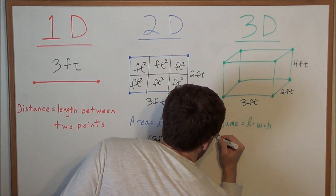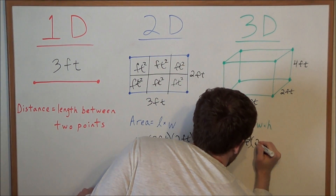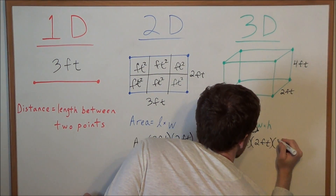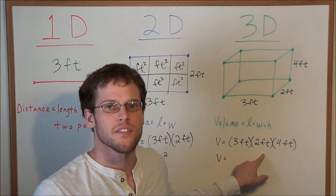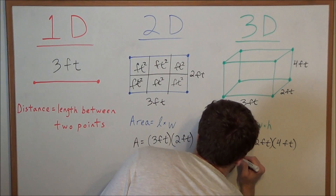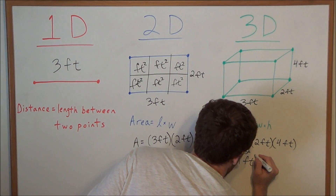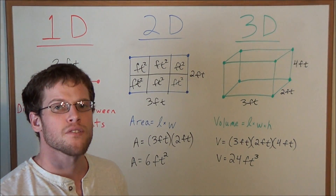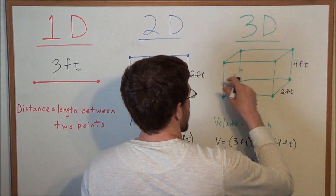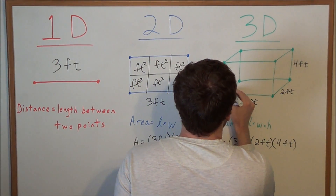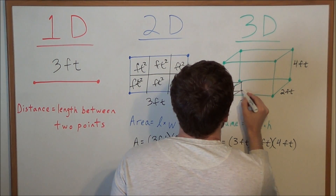Using the equation for volume: volume equals length, which is three feet, times width, which is two feet, times height, which is four feet. The volume equals three times two is six, and six times four is twenty-four. We have feet times feet times feet, which is feet to the third power — also called feet cubed or cubic feet. This tells us that we could place 24 little cubes inside of this big rectangular prism. Volume tells us how many little cubes we could place inside of a solid figure.